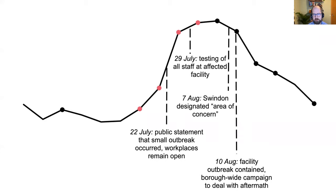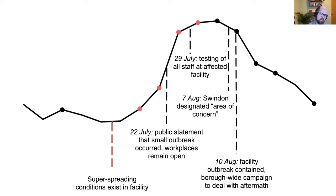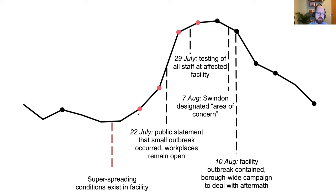The timeline from Swindon Borough Council's website shows that in late July a public statement was made about an outbreak; the workplace was kept open. A week later a swabbing van was sent to test all workers. A week after that, Swindon was designated an area of concern. By mid-August the facility outbreak was totally contained, but because it hadn't been contained within the initial outbreak and spread to the whole community, a borough-wide campaign was needed. Before any of this was apparent, super-spreading was already happening rapidly.